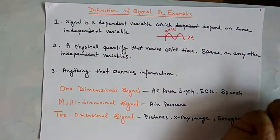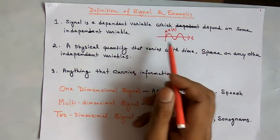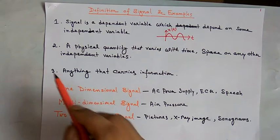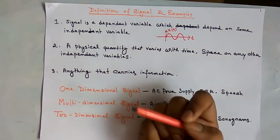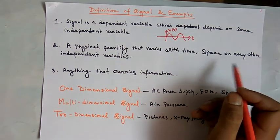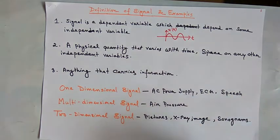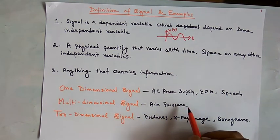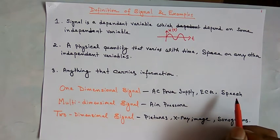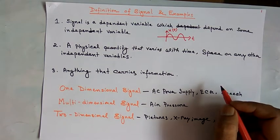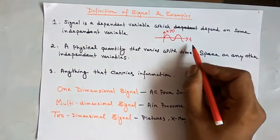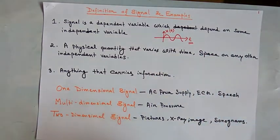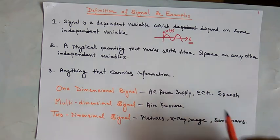We can see x(t) is a continuous time signal. We also define a signal as a physical quantity that varies with time, space, or any other independent variable. Simply put, a signal is anything that carries information. A signal may be one-dimensional, two-dimensional, or multi-dimensional. For a one-dimensional signal like an AC power supply or ECG signal, there is only one independent variable, such as t.